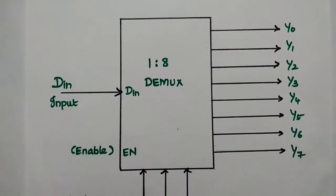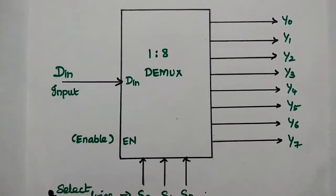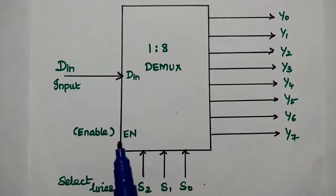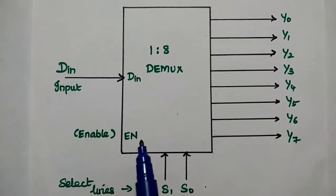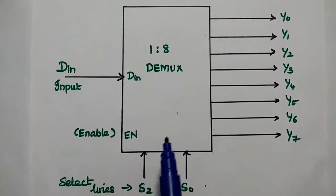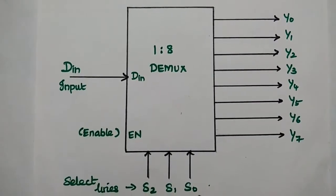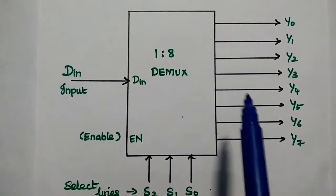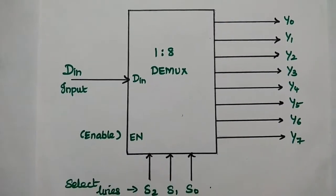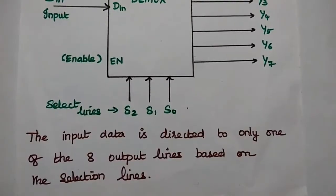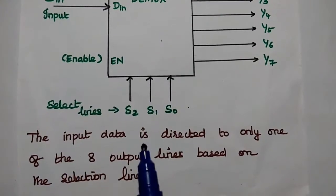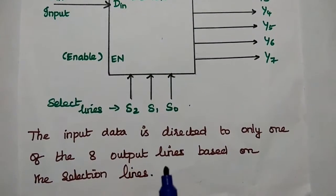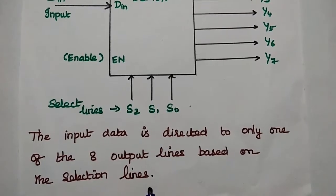This is the general diagram of 1-to-8 demux. There is only 1 input line and there is an enable pin which will enable the operation of the demux. There are 3 selection lines S0, S1, S2, and then 8 possible output lines. The input data is directed to only one of the 8 output lines based on the combination of selection lines.